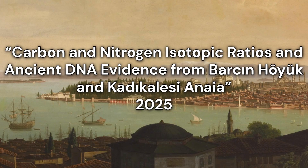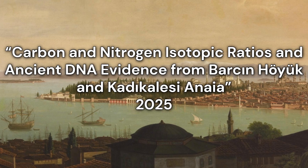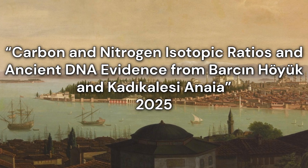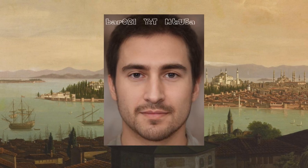A 2025 study named 'Carbon and Nitrogen Isotopic Ratios and Ancient DNA Evidence from Barsan Hoyuk and Catecholisi Anaya' focuses on DNA data from human remains from Western Turkey dating to the Byzantine period. For this video, I have used publicly accessible data to explore one such genome.